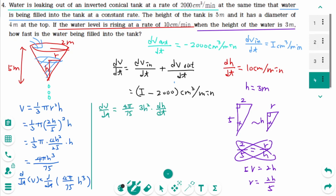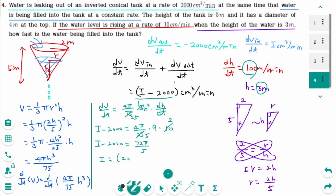Now plug in all the information. dV/dt equals I minus 2,000 equals (4π/75) times 3 times H² (which is 9) times dH/dt (which is 10). Simplifying: I minus 2,000 equals 72π/5. That means I equals 2,000 plus 72π/5 cm³ per minute. The water is being filled into the tank at a rate of 2,000 plus 72π/5 cm³ per minute.